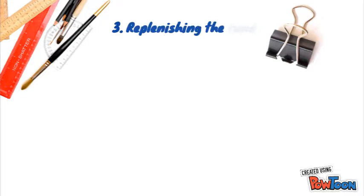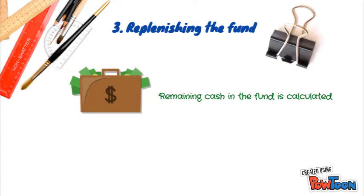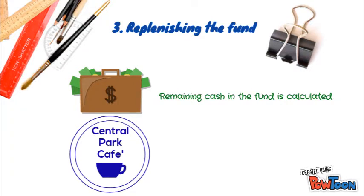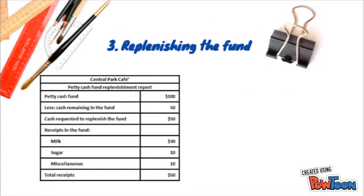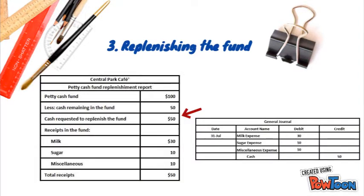As for the last stage, which is to replenish the fund, the remaining cash in the fund is calculated and the cafe will write a check for the total amount of the expenditures, which will restore the fund to its original balance. According to the report, the fund needs $50 to be fully replenished. Therefore, a journal entry is made where three expense accounts are debited and cash is credited as it decreases.